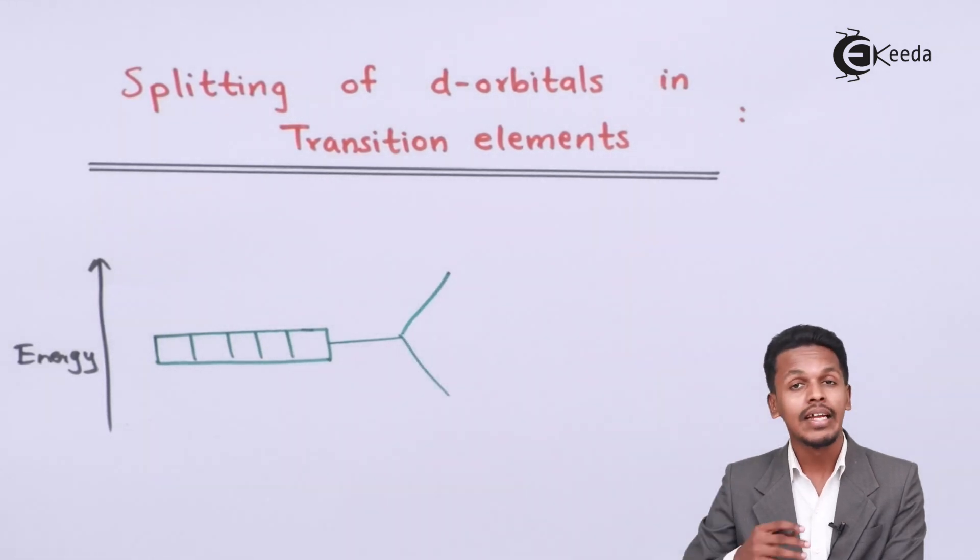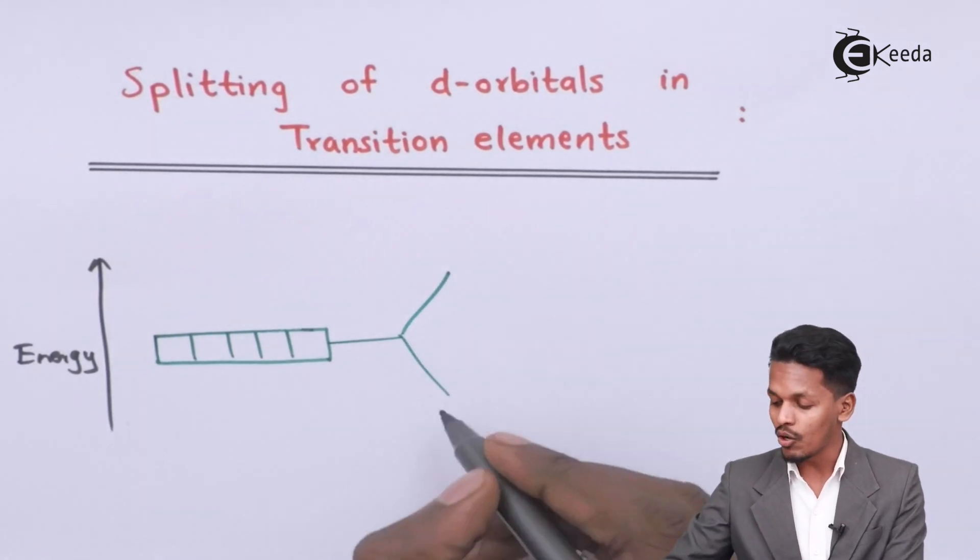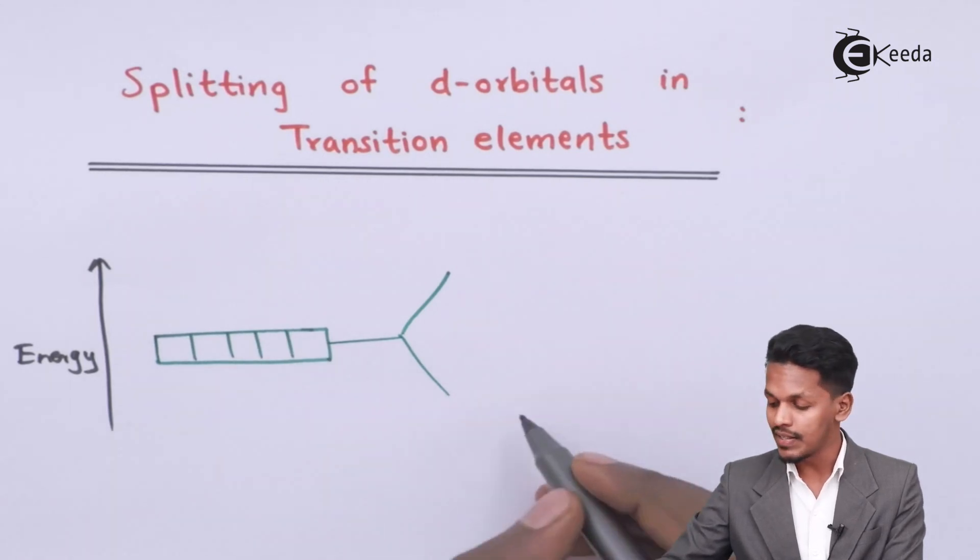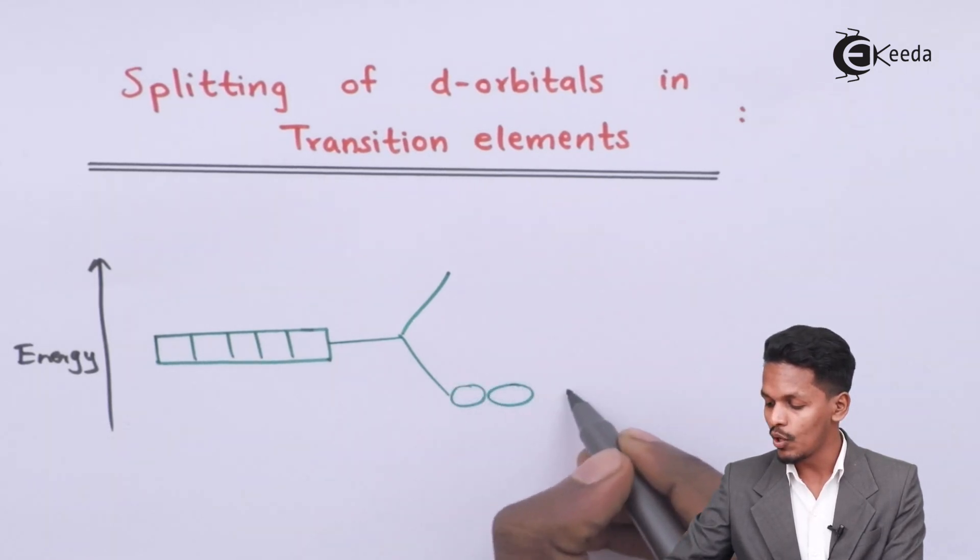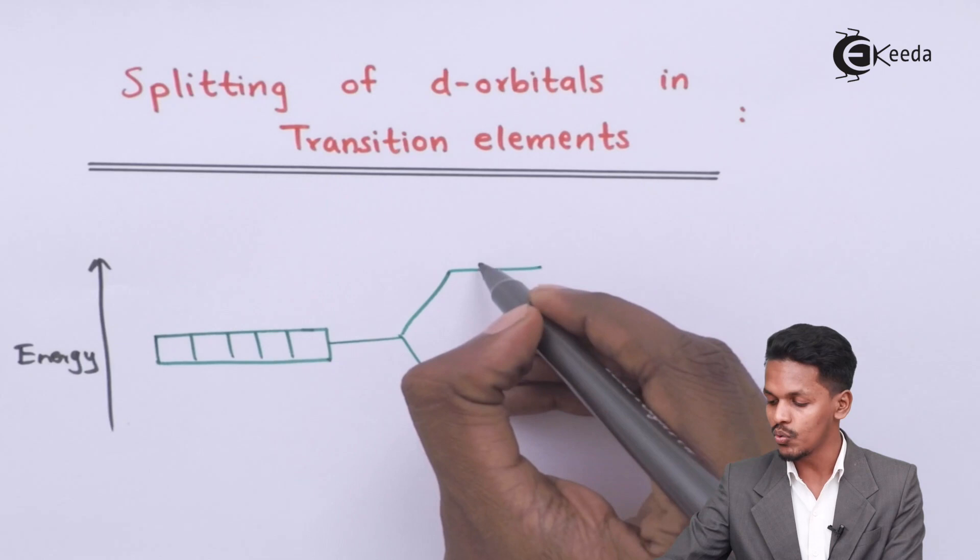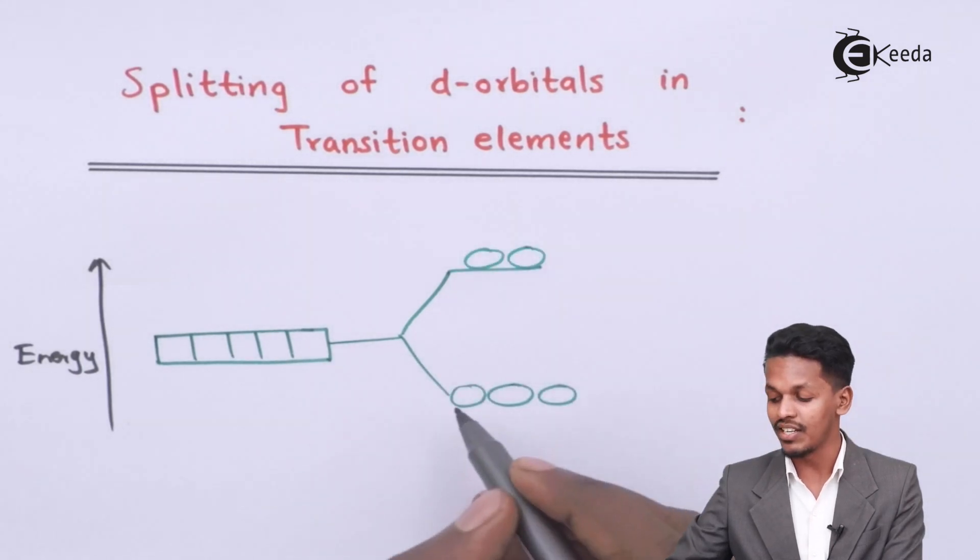There are 2 energy levels, out of which 3 orbitals are in the lower energy level while the other 2 are present at the upper energy level.